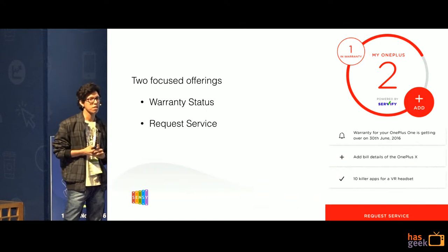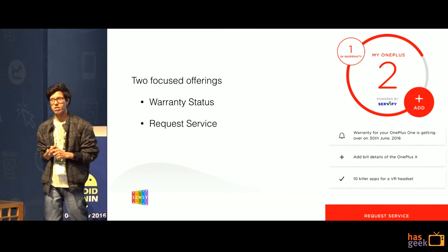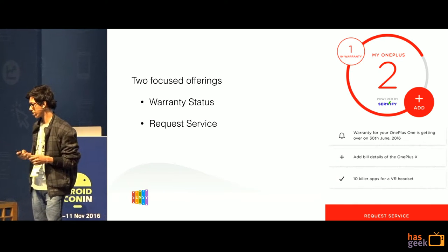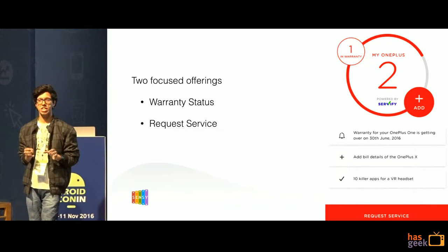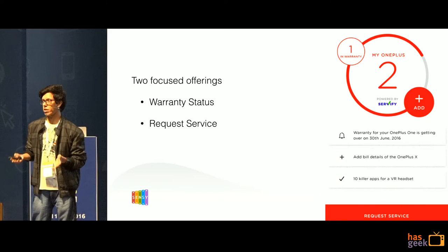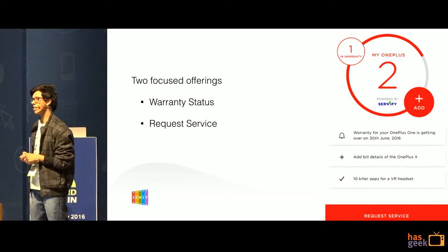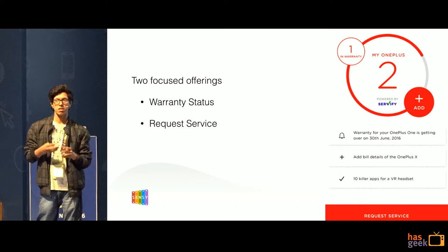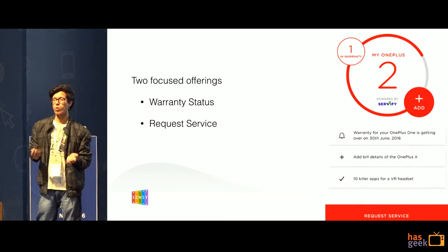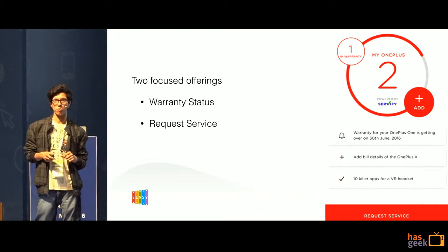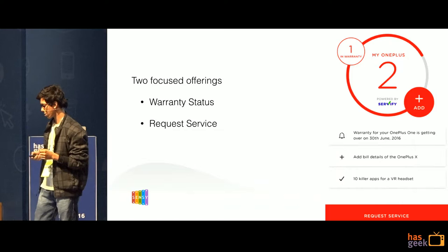Let's look at some other apps. This is the OnePlus service app. It gives you the most important information relevant to you — it tells you your warranty expiry date, and if you need to request a service, this is the button you should press. Very focused.